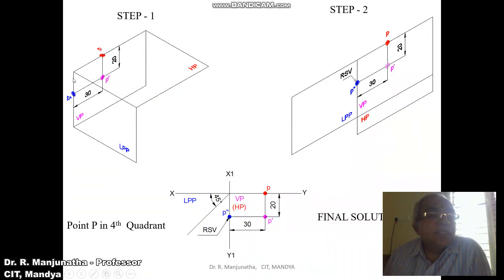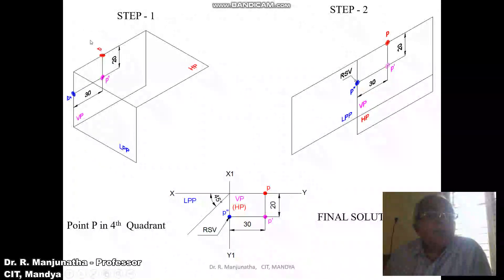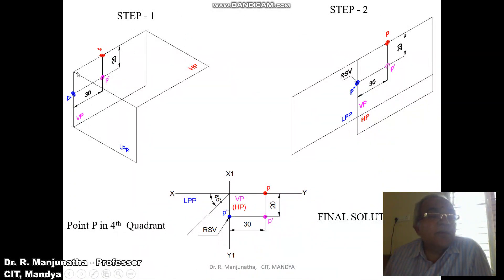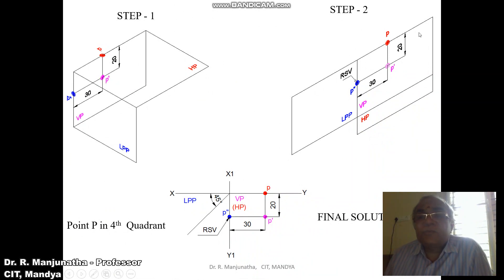When you look from the right side view, you can see the distance below HP — that is the front view distance — and also from the top view you can see the distance of 30mm, which is the distance with respect to the profile plane. When you look from the top view, point p will be on VP, so obviously that point will be on HP. Looking from the right side view, we can see the distances of both the front view and the top view. We cut at this point, rotate HP down and LPP to the left side, and the distance in front of LPP can be seen in the vertical plane and also in the horizontal plane.